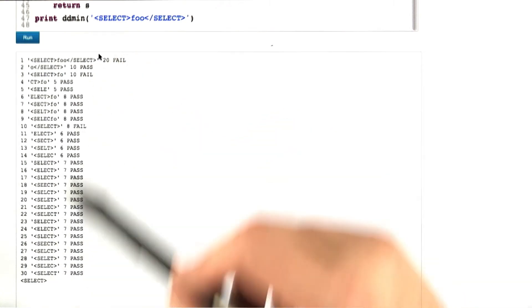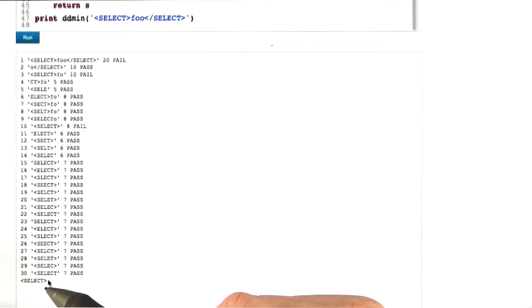one character after one character is being removed, until we finally see, after 29 tests and one assertion, we see the final result, the simplified input select.